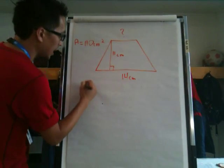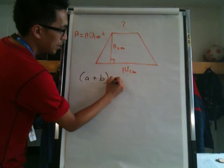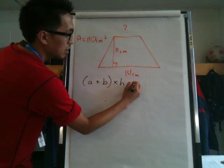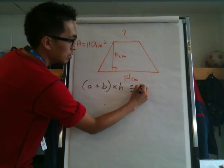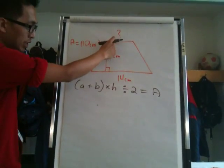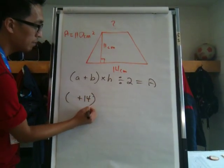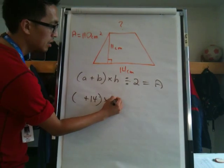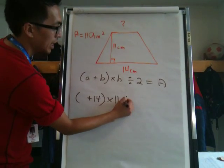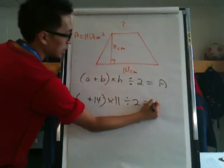So if we look at that formula again, which was side A plus side B, times the height, divided by 2, equals the area. In this case, we don't know side A, but we do know side B which is 14. We do know the height, and we do know that we still divide it by 2, and we get 110.